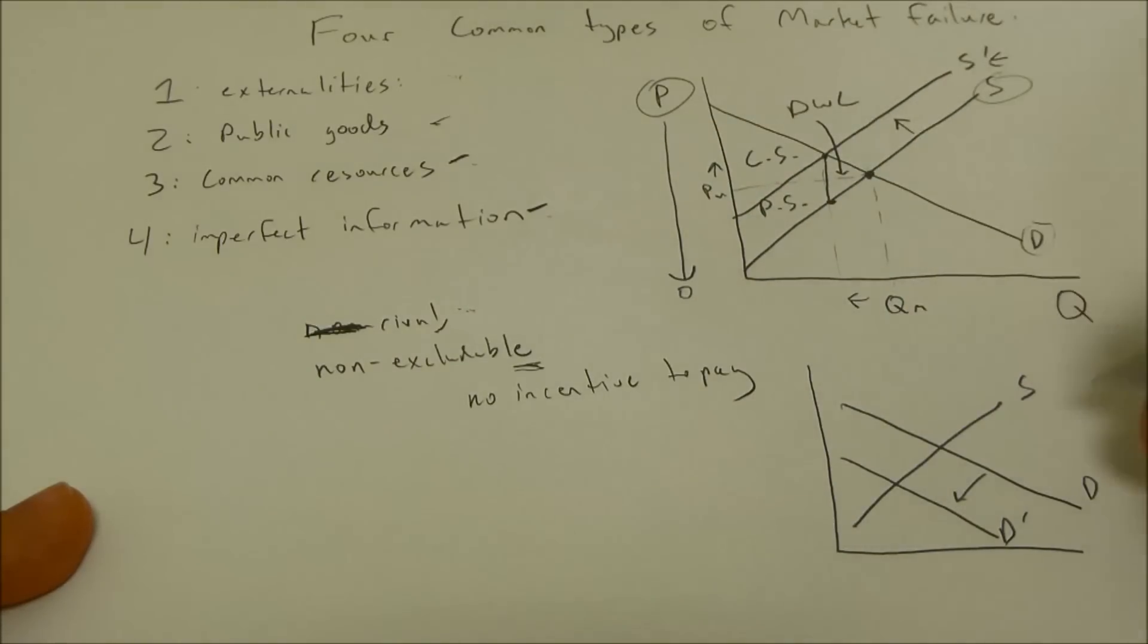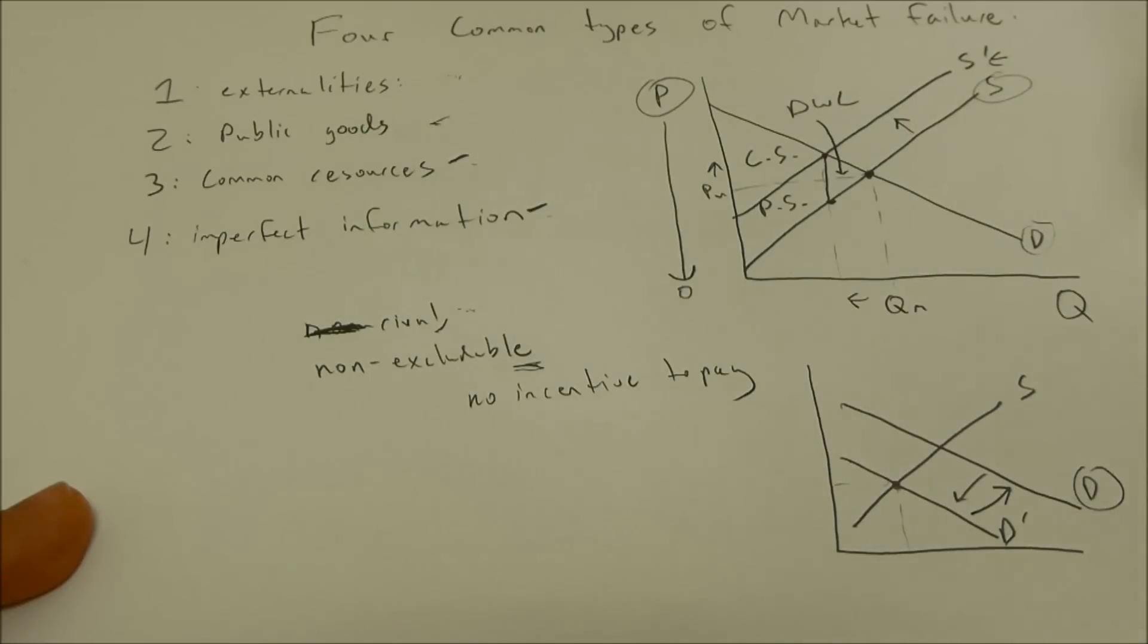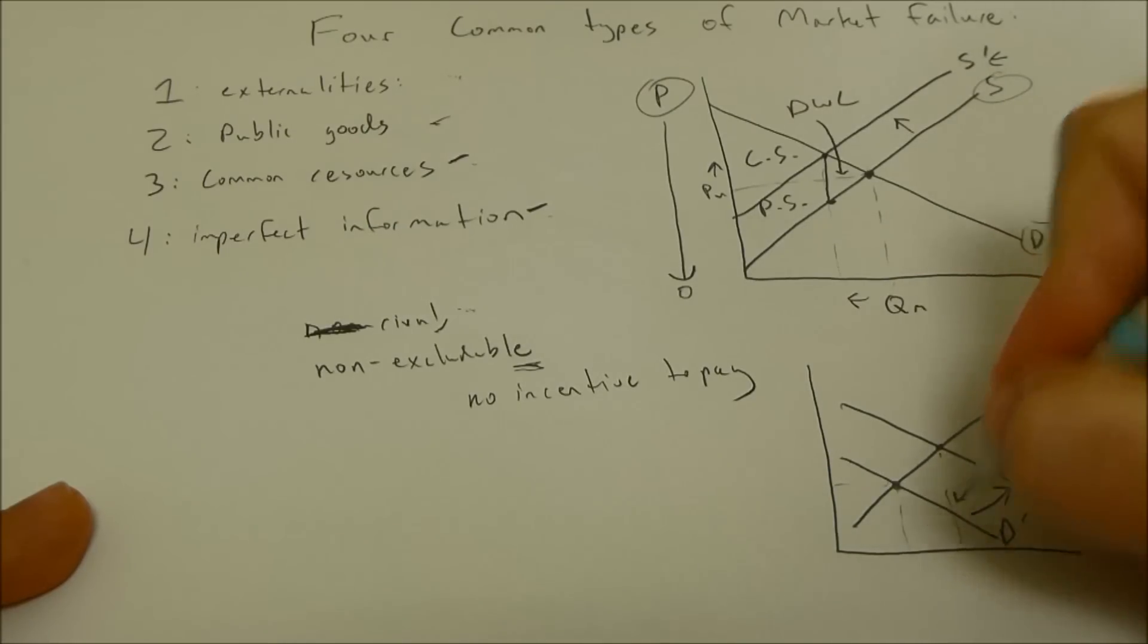But because they don't know that it's bad, they have imperfect information, they keep their original demand curve which is higher. So true equilibrium should be here. However with imperfect information, we see the equilibrium here. And again we get our deadweight loss.